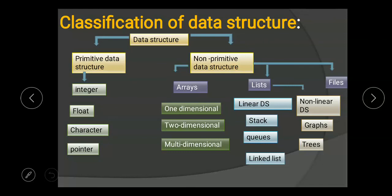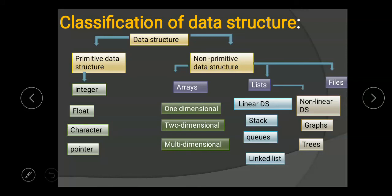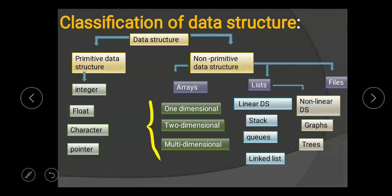Classification of data structures: there are two types — primitive data structure and non-primitive data structure. In primitive data structures we have four types: integer, float, character, and pointer. In non-primitive data structures we have three types: arrays, lists, and files. In arrays we have three types: one-dimensional, two-dimensional, and multi-dimensional. In lists we have two types: linear and non-linear data structure.